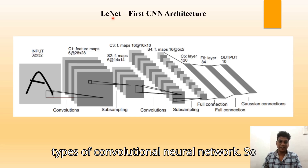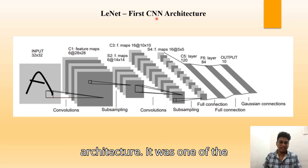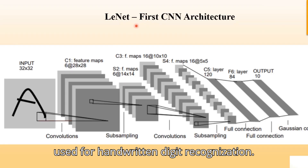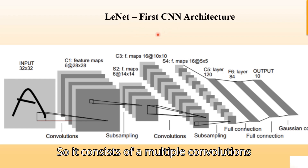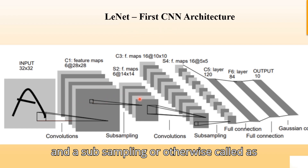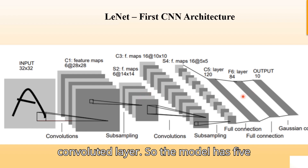Welcome to this video on different types of convolutional neural networks. The first type is LeNet, the first CNN architecture. It was one of the most successful CNNs and has been widely used for handwritten digit recognition. It consists of multiple convolution and subsampling (pooling) layers followed by fully connected layers.